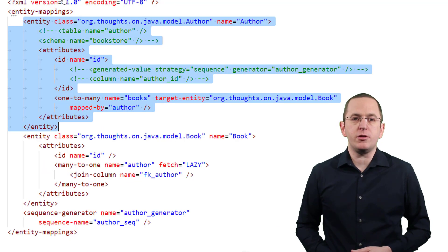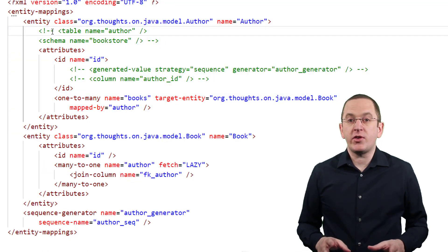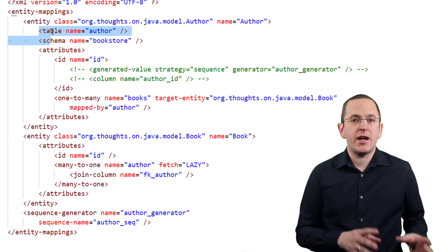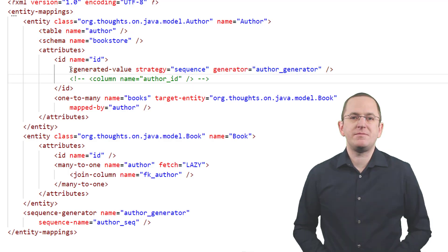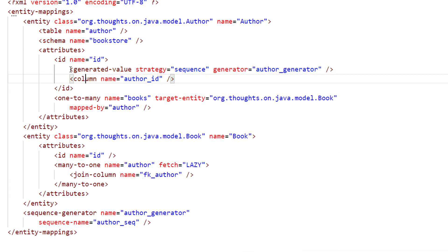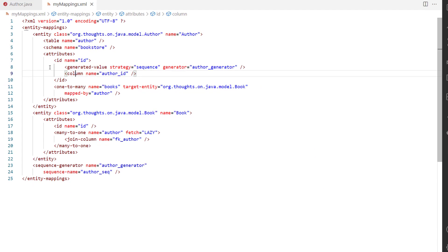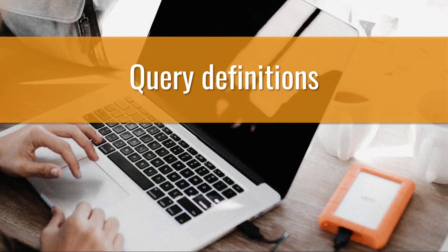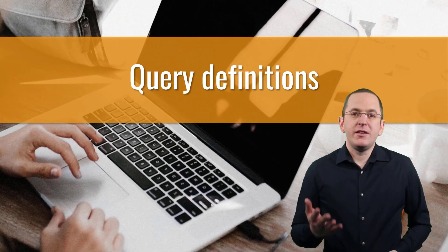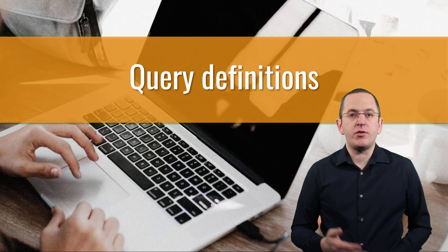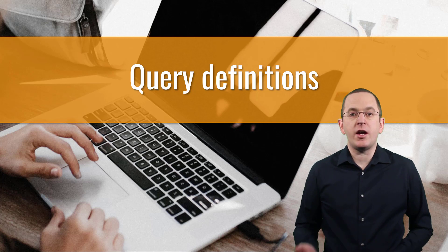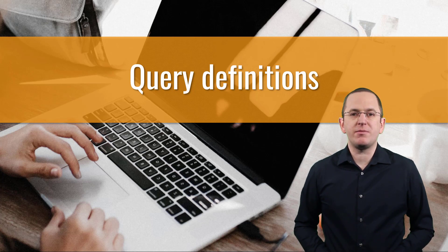The following example tells Hibernate to map the Author entity to the author table in the bookstore schema, to map the ID attribute to the author_id column, and to use the sequence author_seq to generate its primary key value. And as in the previous example, you can of course define the same mapping in XML. You can also define named queries, result set mappings, entity graphs, and so on via annotations and in XML configuration files.